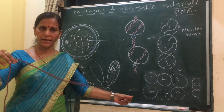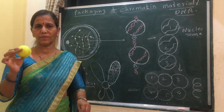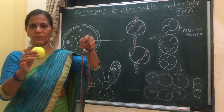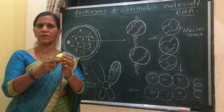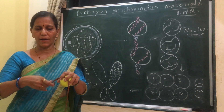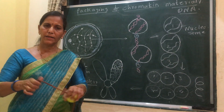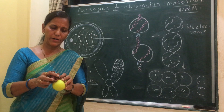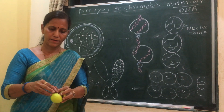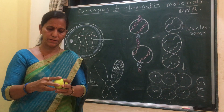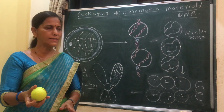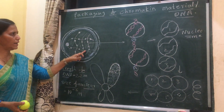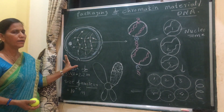This is the DNA and this is the nucleus. How does this larger DNA get accommodated in this smaller nucleus? It is possible due to packaging. If I fold this material, then it is possible that this material gets accommodated in this nucleus. In the same manner, this DNA gets accommodated in the nucleus due to its packaging.